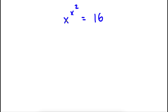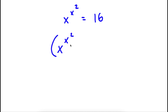Alright, so I have x to the power of x squared is equal to 16. Now, the first thing I'm going to do is take the power of 2 on both sides. So now I have x to the power of x squared, to the power of 2, is equal to 16 to the power of 2.